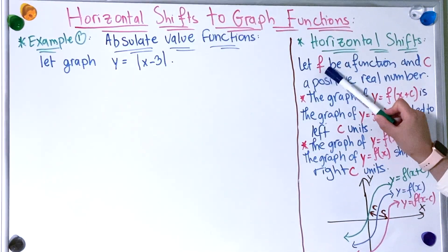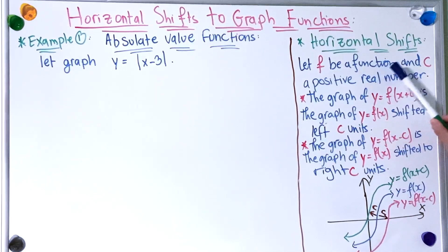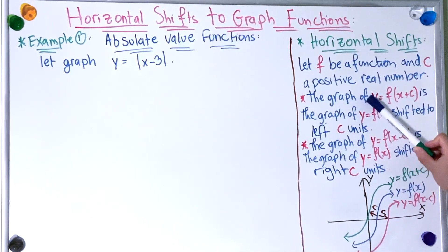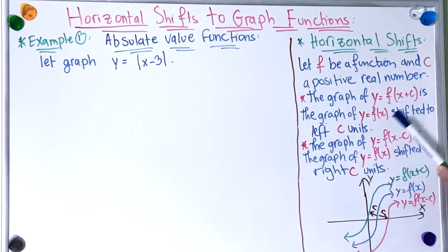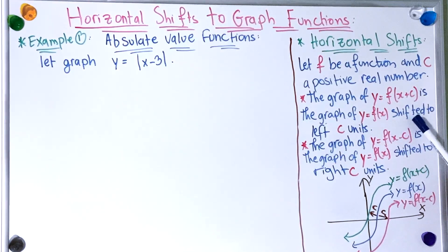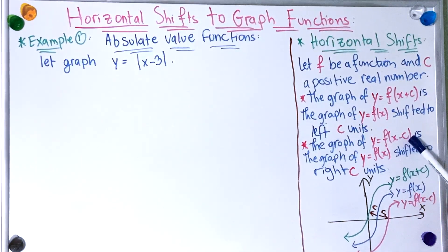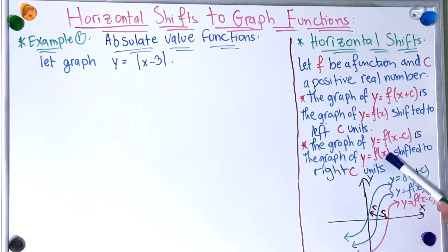Horizontal shifts. Let f be a function and c a positive real number. The graph of y = f(x + c) is the graph of y = f(x) shifted to the left c units, and the graph of y = f(x − c) is the graph of y = f(x) shifted to the right c units.